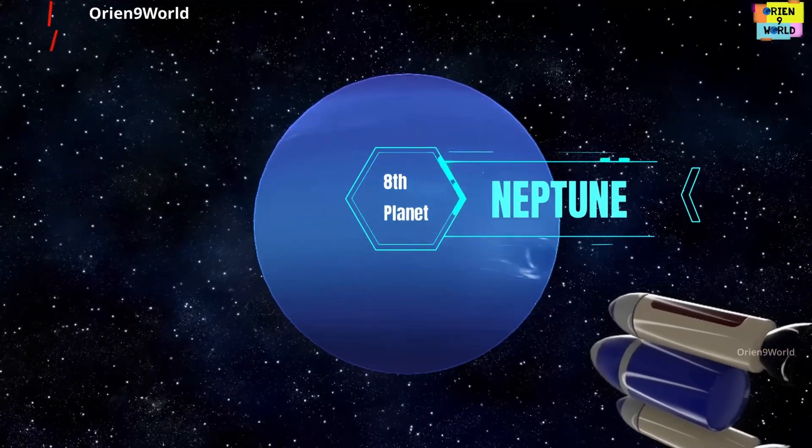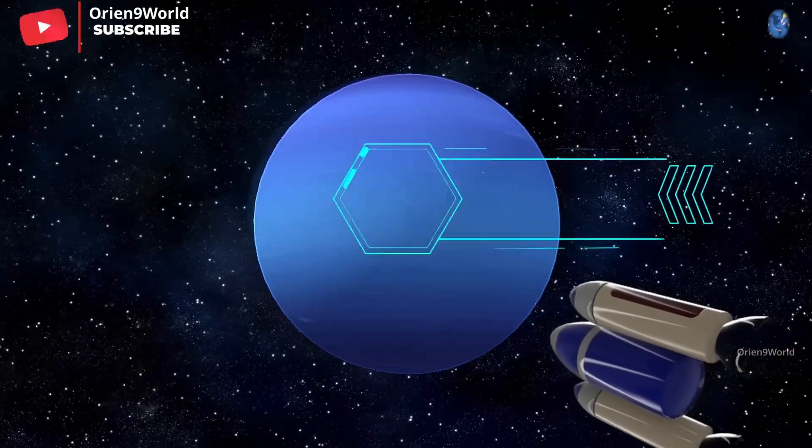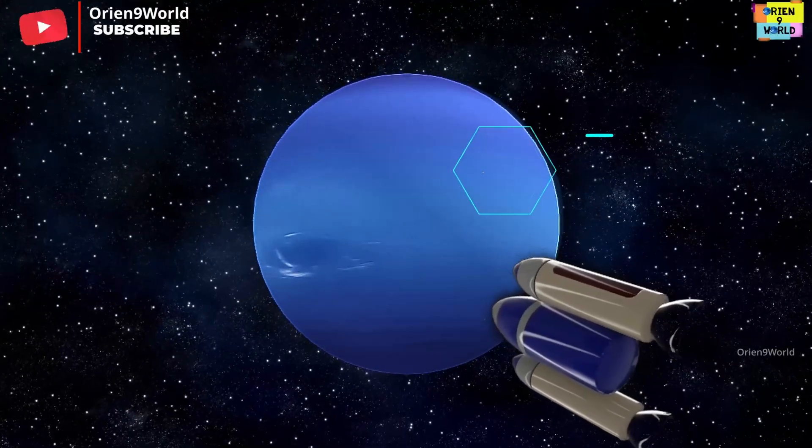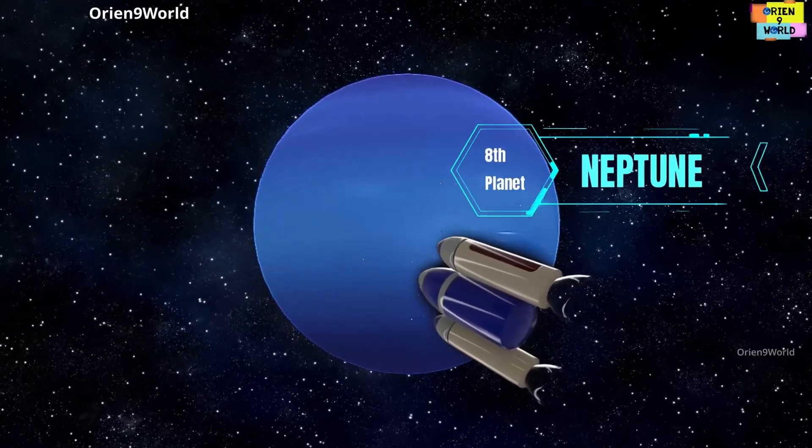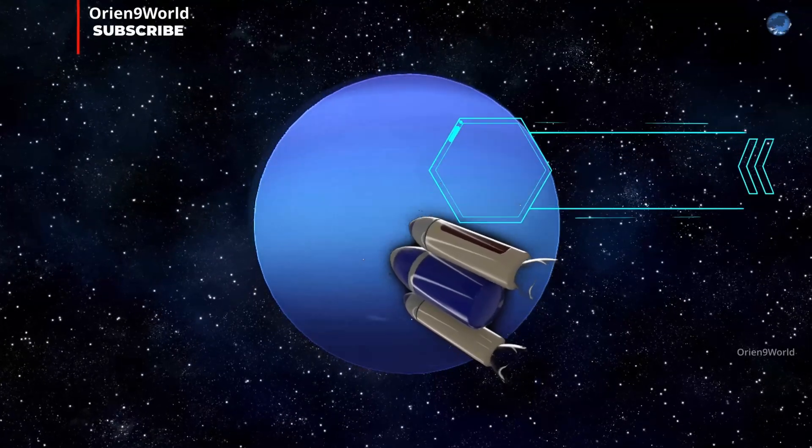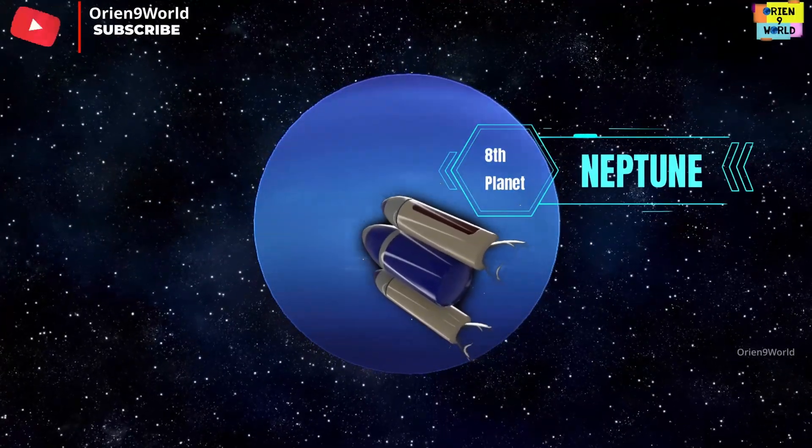My name is Neptune, I am blue in color, I'm the eighth planet from the sun. I have too many storms in my atmosphere, and I'm the furthest planet from the sun.